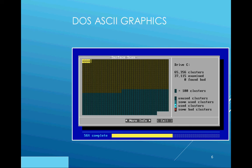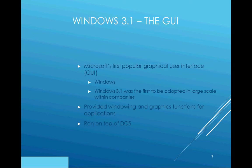Then Windows 3.1 came out, which was the most popular graphical user interface released by Microsoft. It was first adopted on a large scale within companies, provided windowing and graphics functions for applications, and ran on top of DOS.